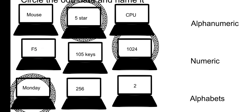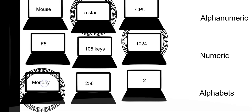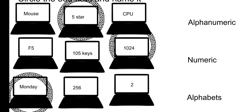Second row: F5, 105 keys, 1024. F5 and 105 keys are alphanumeric, but 1024 alone is numeric — so circle 1024 and write numeric. Third row: Monday, 256, 2. Here Monday is the odd one — 256 and 2 are numbers, but Monday is alphabetic — so write alphabetic.